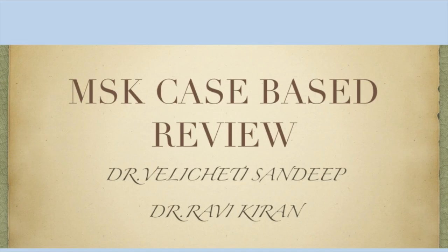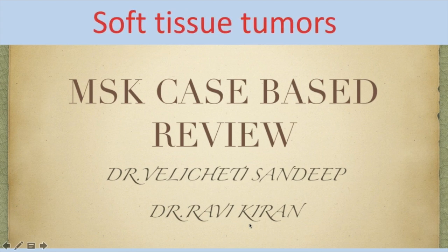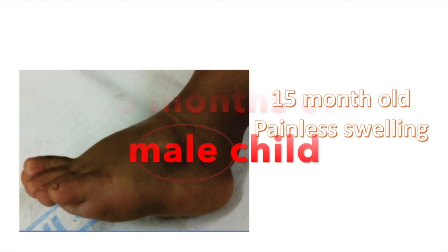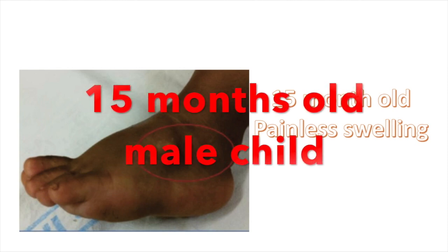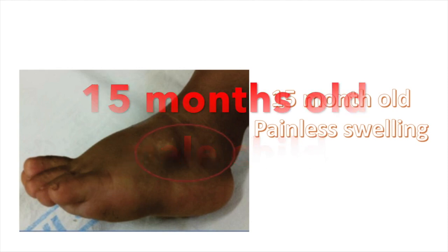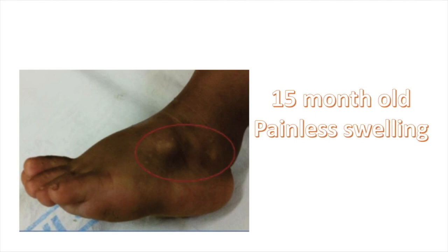Today I have a musculoskeletal soft tissue tumor case to show you. This is one of my co-authors, Dr. Ravikiran, who is an orthopedician. This is a 15-month-old child who presented with painless swelling — multiple soft tissue swellings palpable subcutaneously — slowly growing over the period of one year, progressive in nature.